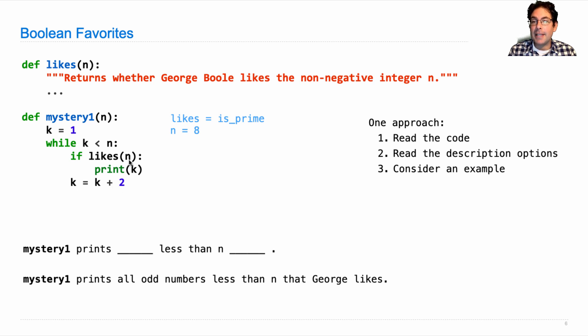If likes eight, don't print again. Oh this will actually never print in this example, which means that this description is wrong. We're not printing all the odd numbers less than n that George likes, otherwise we'd be printing prime numbers like three. But when we worked through an example we found that this doesn't print three.